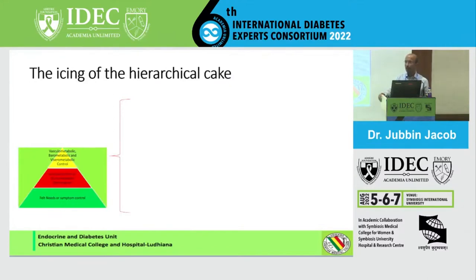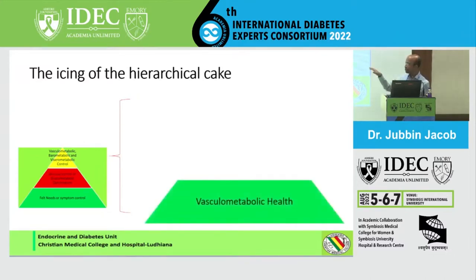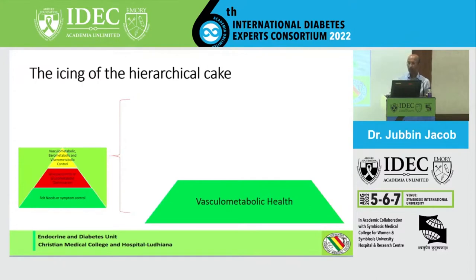The icing on the cake is something we have been working on for almost 10 to 20 years since UKPDS came. We realized we could reduce microvascular complications by achieving a certain target — 7% is what ADA believes, 6.5% is what ACE believes. But these are all based on vasculometabolic health and microvascular outcomes. Some macrovascular outcomes were also addressed, primarily if it was early-stage diabetes of less than 10 years, where you could do good in terms of macrovascular outcomes as well.